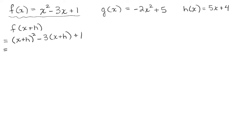Now remember, X plus H squared is not X squared plus H squared. X plus H squared means X plus H times X plus H. We can go ahead and distribute our negative 3 to the X plus H, so that's negative 3 times X equals negative 3X, and negative 3 times H equals negative 3H, plus 1. But we still have to do the multiplication X plus H times X plus H using the FOIL method.